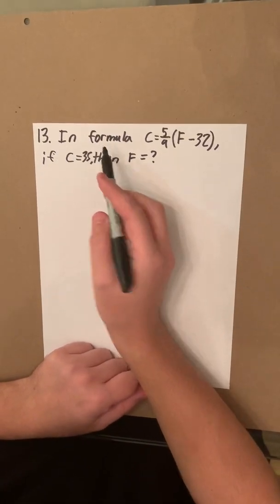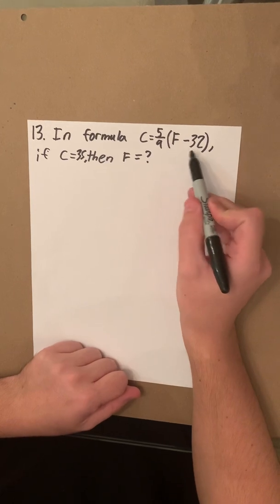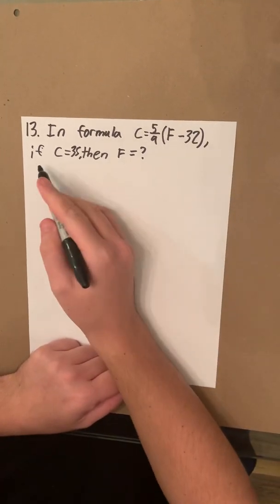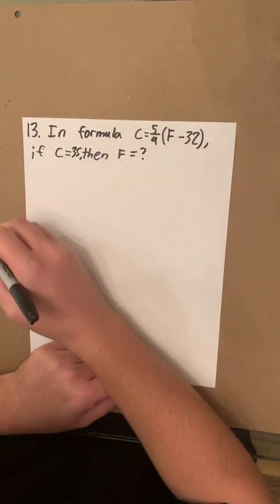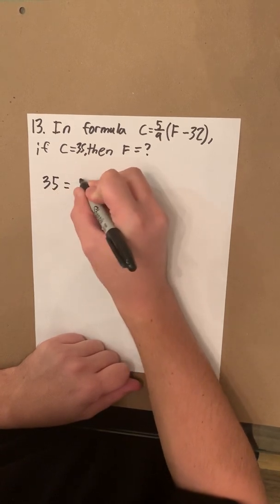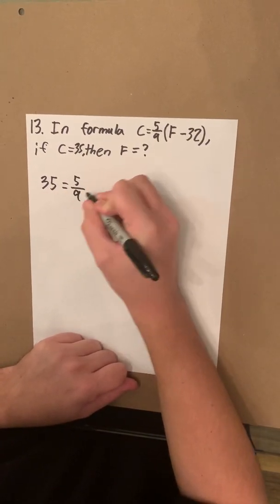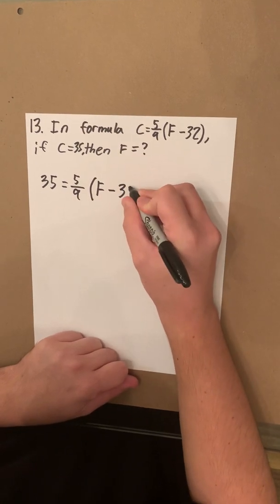So number 13. In formula C equals 5 over 9 times F minus 32, we're plugging in C equals 35 and we're solving for F. So let's rewrite this. It's going to be 35 equals 5 over 9 times F minus 32.